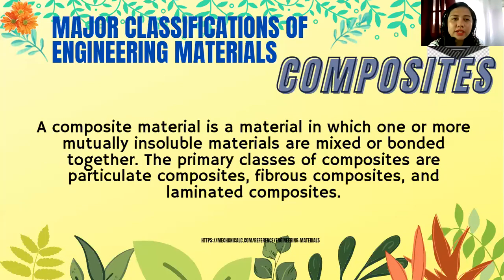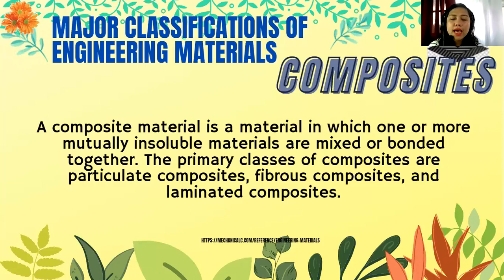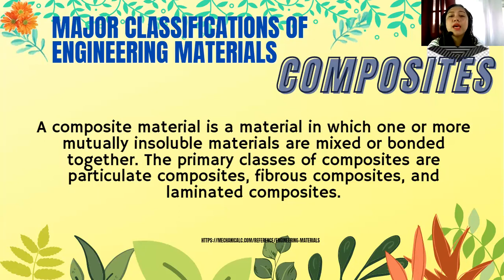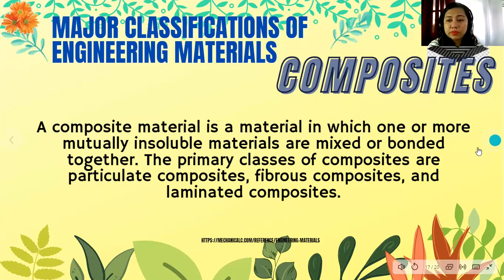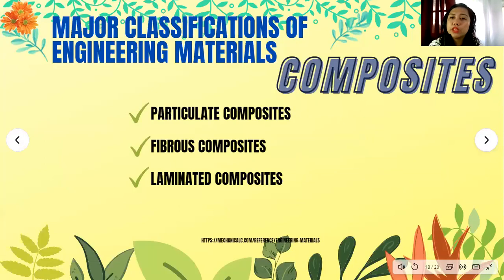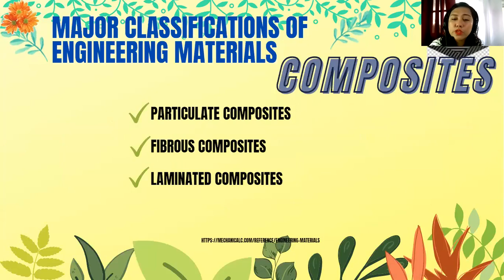Another major classification of engineering materials is composites. A composite material is one in which two or more mutually insoluble materials are mixed or bonded together. The primary classes of composites are particulate composites, fibrous composites, and laminated composites.